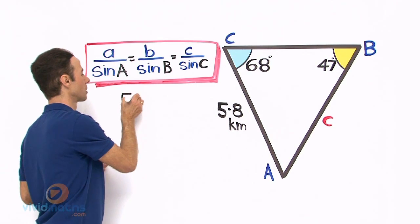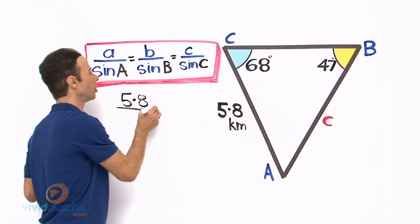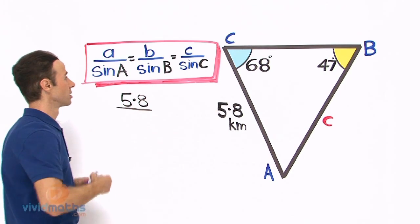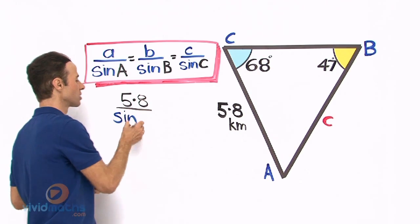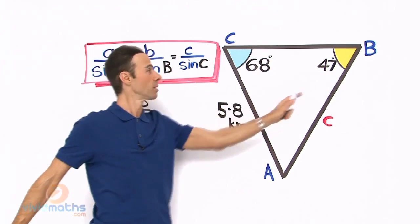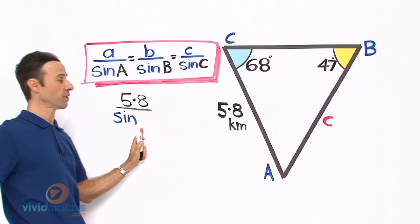All over sine B, which is going to be sine capital B. You can see what that is - sine capital B up across there is 47 degrees, that goes there.